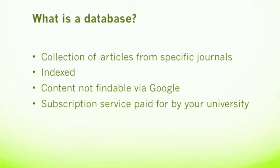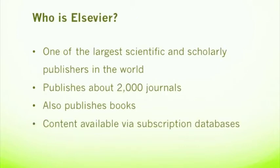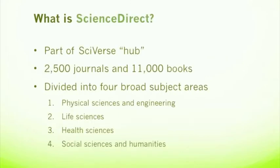If you were not affiliated with this university, you most likely would not be able to use the database. Science Direct is published by Elsevier, which is one of the largest scientific and scholarly publishers in the world. Elsevier publishes about 2,000 journals and thousands of books each year, and one of the ways it makes its content available is through subscription databases like Science Direct. Science Direct is part of a larger hub of Elsevier science resources called SciVerse, and it includes content from about 2,500 journals and 11,000 books.